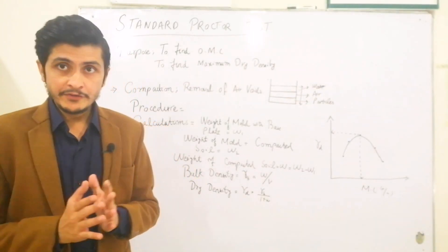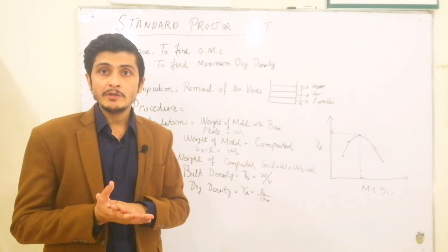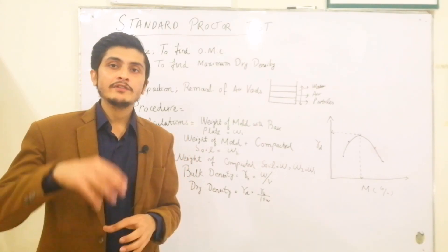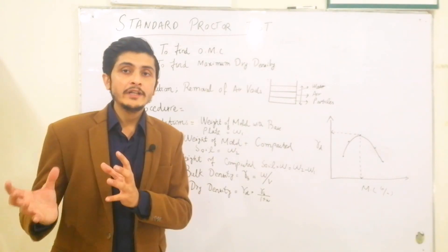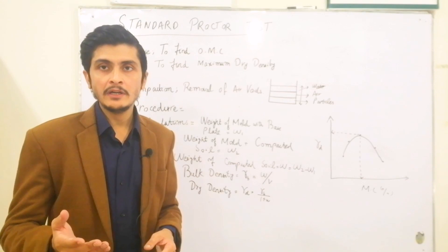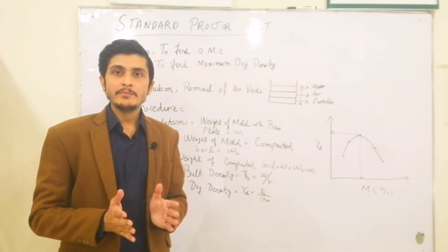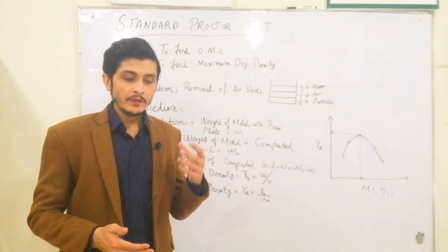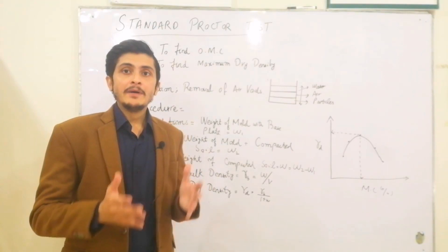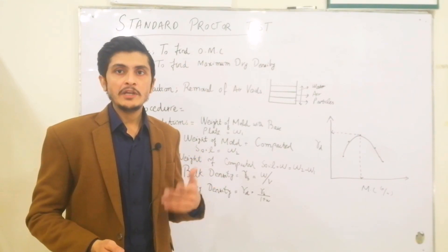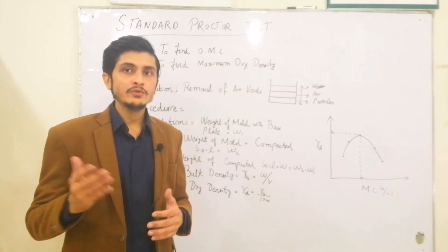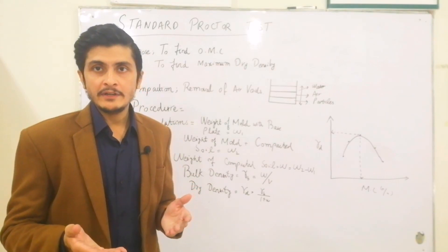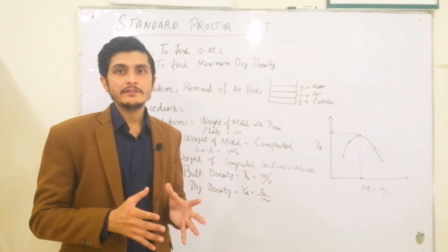The process is very simple. You have a mold with a detachable base plate; the mold diameter is around 4 to 6 inches and it also has a collar which fixes on the top. Take a soil sample of around 3.5 kg and bring it to the lab. If the soil is fine-grained, pass it through sieve number 4 and take approximately 3 to 3.5 kg of that passing material. Then add 3 to 4 percent water to the soil sample and mix it thoroughly.